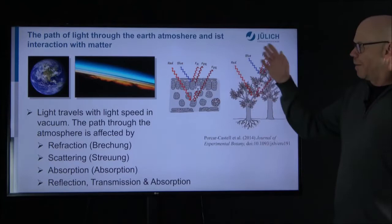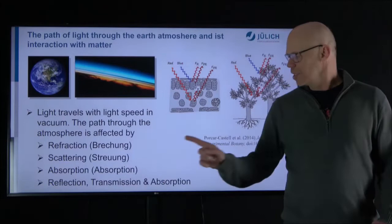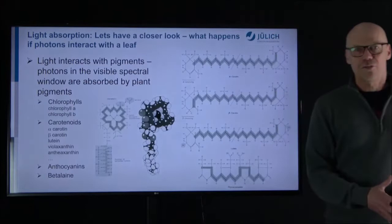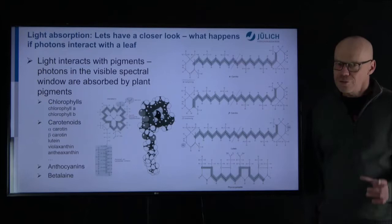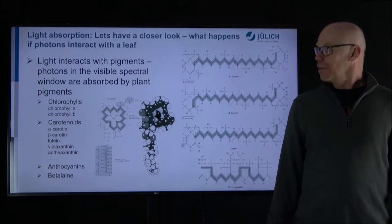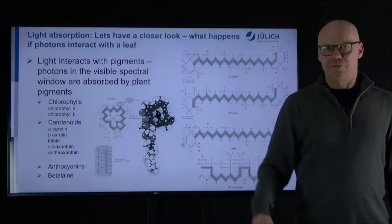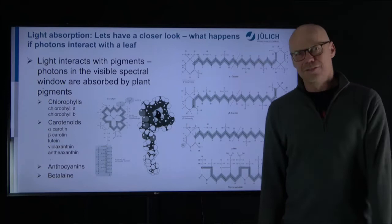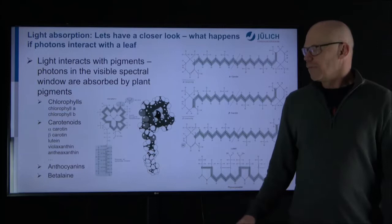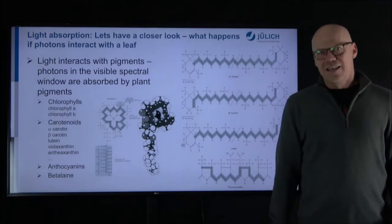Now the photons can finally interact with a plant leaf or plant canopy. When a photon hits a leaf, it can undergo reflection, absorption, or transmission. To understand this, let's first dive into plant pigments. Pigments are those components which have a specific color — they interact strongly with photons. One of the pigments you may know is chlorophyll, shown here in its chemical formula. This is the main pigment of the photosynthetic apparatus, and it is built specifically to absorb light from the Sun.